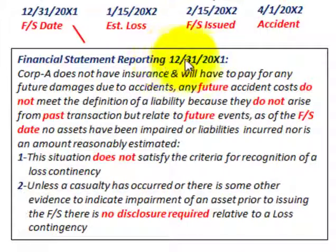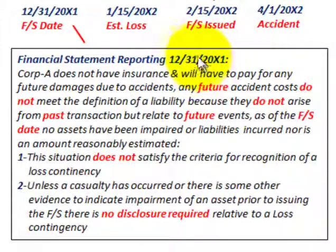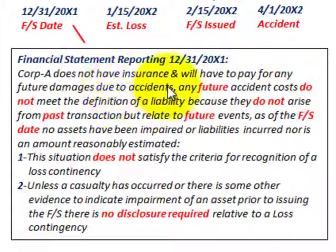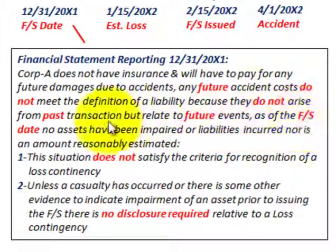For the year 20X1, we didn't have any major accidents, so there would be no contingent liabilities for major accidents in that year. We're looking into future probable damages for 20X2 — should they be reported on the 20X1 financial statements? The answer is no. Corporation A does not have insurance and will have to pay any future damages, but future accident costs do not meet the definition of a liability because they do not arise from past transactions — they relate to future events as of the financial statement date. No assets have been impaired, no liabilities incurred, nor is an amount reasonably estimated.